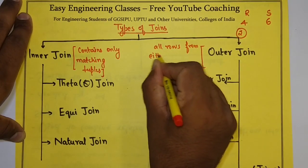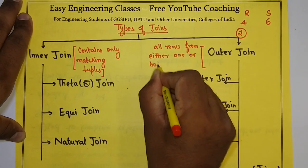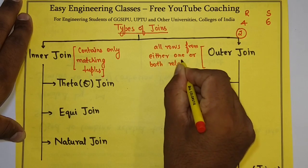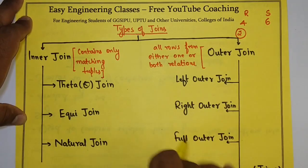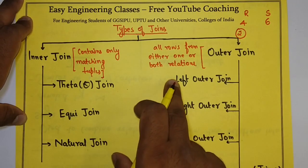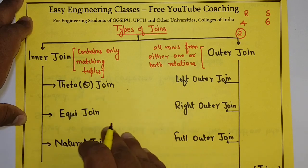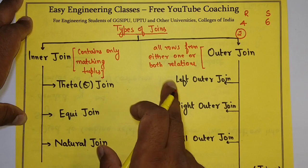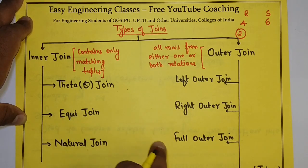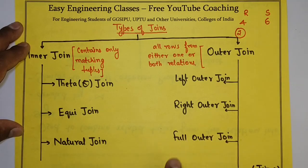Whereas outer join will contain all rows from either one or both relations, depending on the type of outer join. If you are using left outer join or right outer join, then the outcome will have all the tuples of one relation — either left in left outer join or right in right outer join. If you are using full outer join, it contains all tuples from both relations.